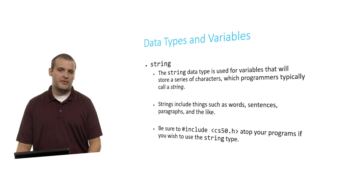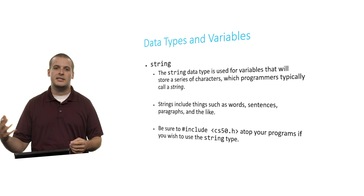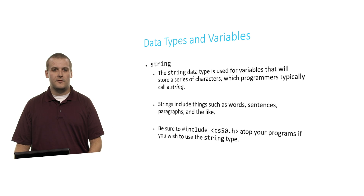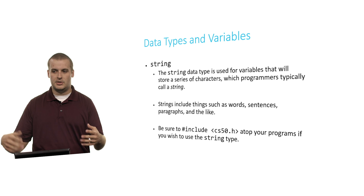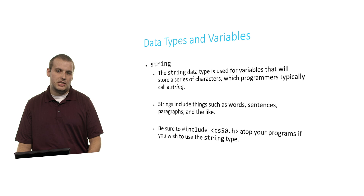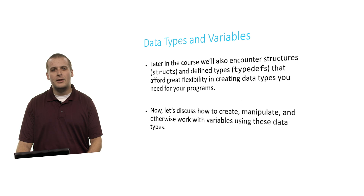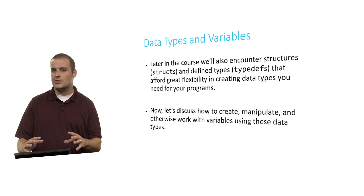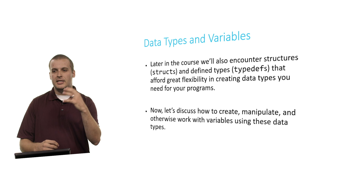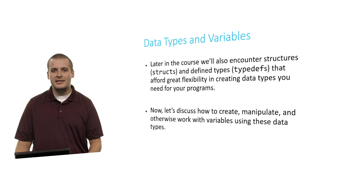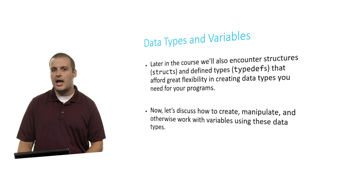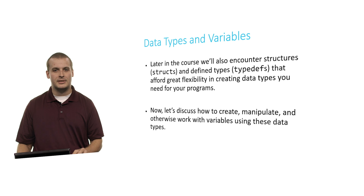The other major data type provided in the CS50 library is string. Strings are really just words — they're collections of characters: words, sentences, paragraphs, maybe whole books. Very short to very long series of characters. If you need to use strings, just be sure to pound-include CS50.h at the beginning of your program. Later on in the course we'll also encounter structures, which allow you to group an integer and a string into one unit, and defined types which allow you to create your own data types.